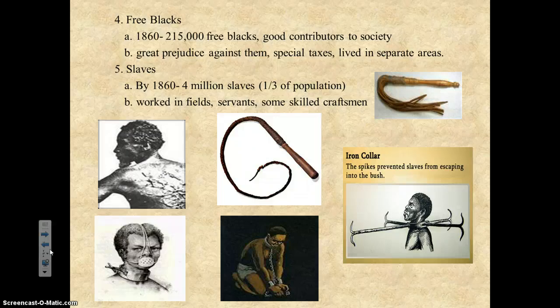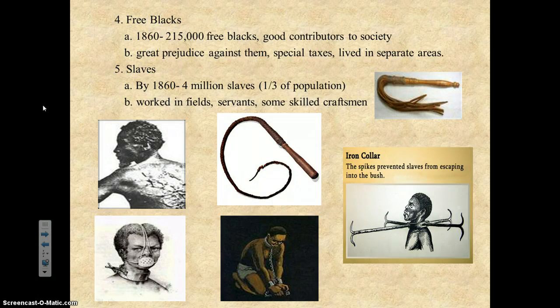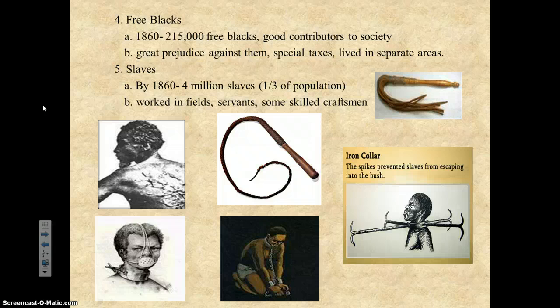The last two groups in the South are the free blacks and the slaves. By 1860, at the start of the Civil War, about 215,000 free blacks lived in the South. They contributed to the economy but faced huge amounts of prejudice and racism — they paid special taxes, lived in separate areas, and had to carry cards proving they were free. If caught breaking a law, they could be sold into slavery.